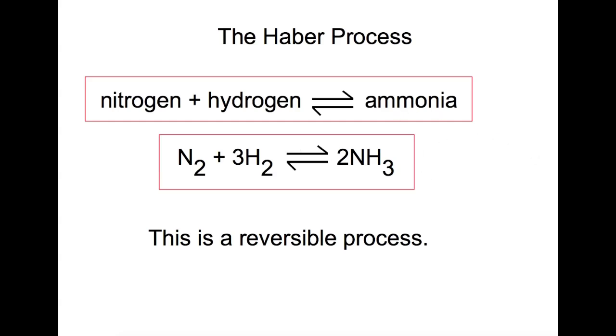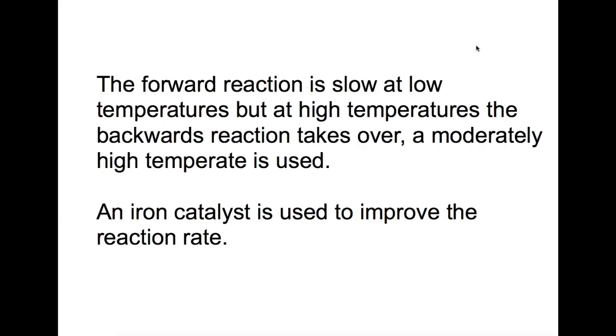This means that the yield can be lower. So how do we make sure we get enough ammonia? The forward reaction is very slow at low temperatures, but at high temperatures the backward reaction takes over, and this means that we don't get the yield of ammonia that we would desire. A moderately high temperature is used for this purpose. An iron catalyst is also used to improve the reaction rate.